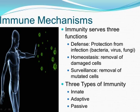Innate immunity. Everyone is born with innate or natural immunity, a type of general protection. Many of the germs that affect other species don't harm us. For example, the viruses that cause leukemia in cats or distemper in dogs don't affect humans.